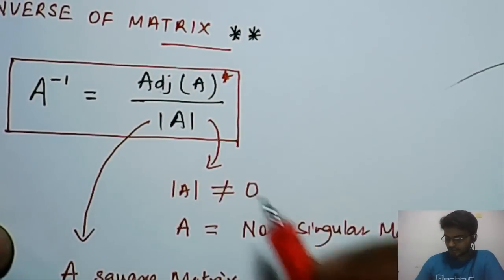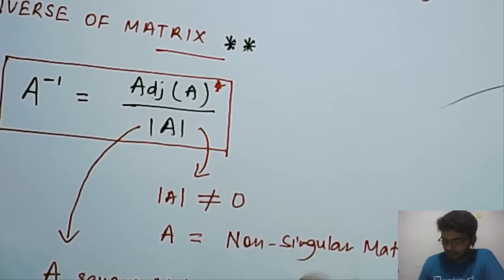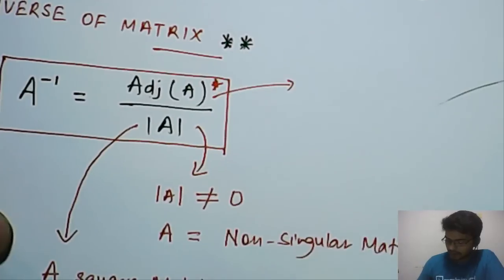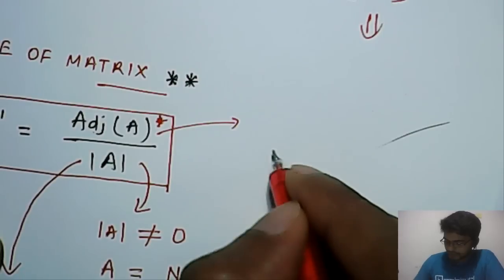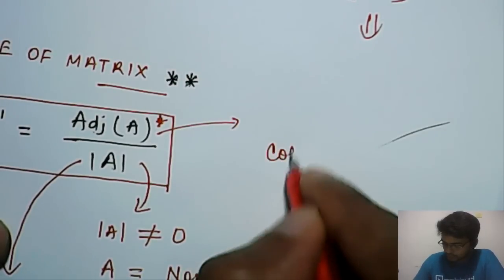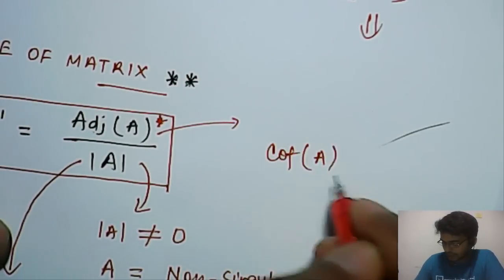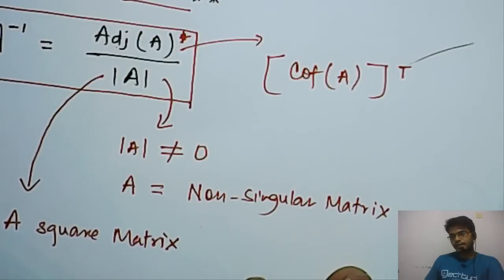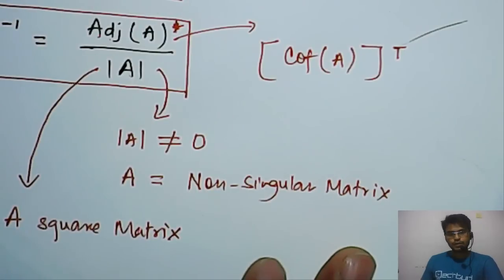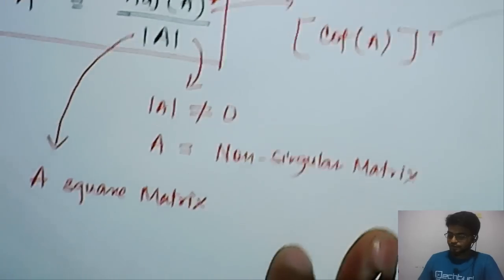So let's understand it. Adjoint A is basically, adjoint A we write as the cofactor matrix, cofactor matrix of A and then its transpose. So adjoint A is the transpose of cofactor matrix.